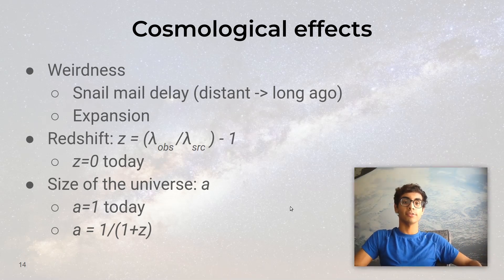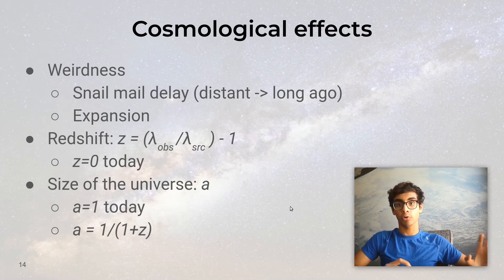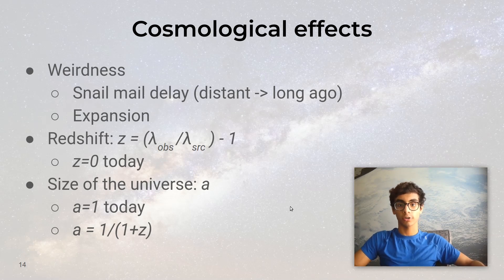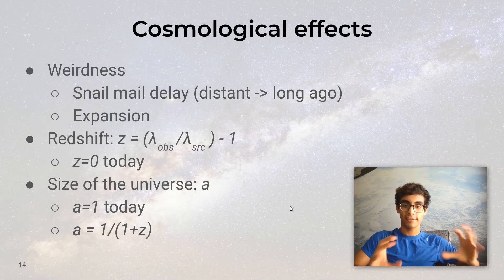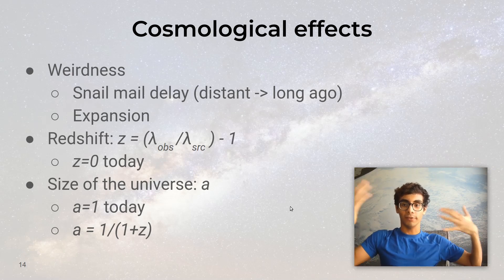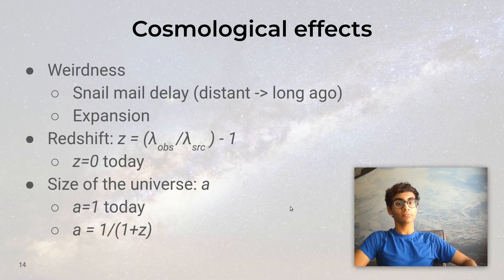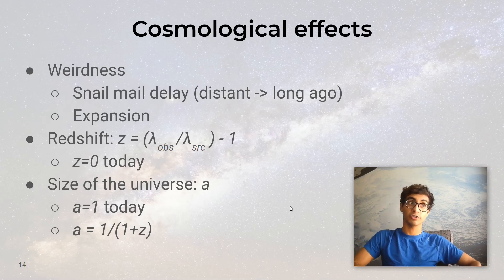The expansion of space is measured using something called a scale factor, denoted by little a. It's a measure of relative length calibrated so that a equals 1 today. In the past, the universe was smaller and a was also smaller. To help get an intuition for it, you can think of it as the diameter of the universe measured in terms of today's diameter, although this isn't a fully accurate way to think about it. But it's good for intuition.